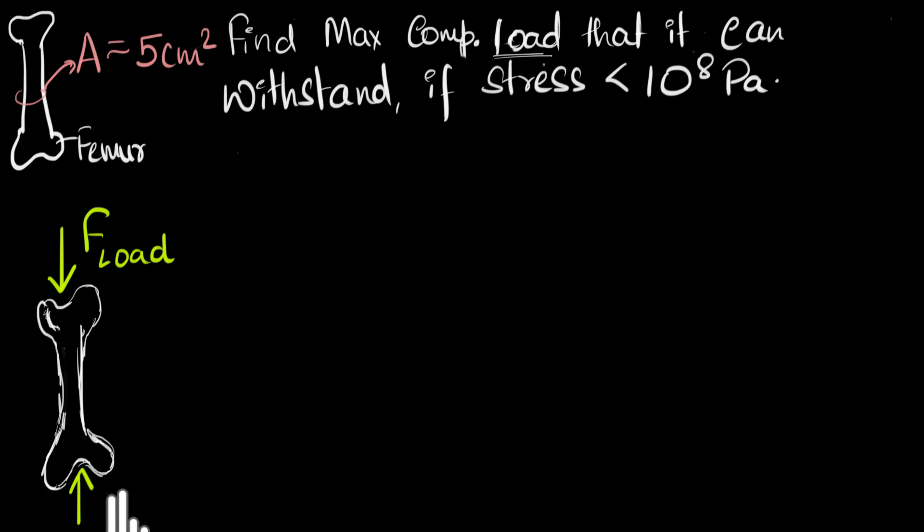And most of the time your thigh bone is getting compressed like this. For example, when you are standing, the top part of the body is pushing down on you and the ground or the bone that comes below this is pushing up on it. So your bone is in equilibrium but it's under compression.